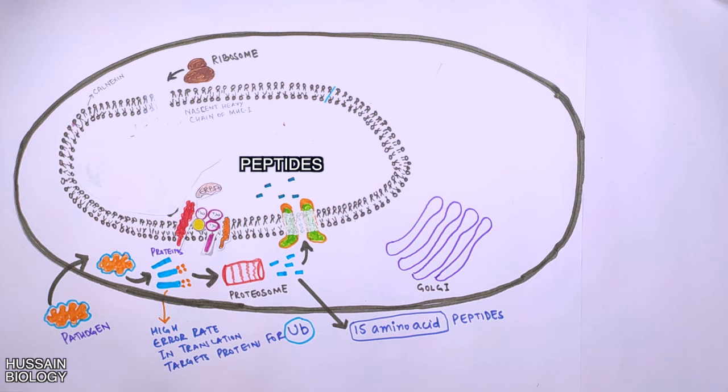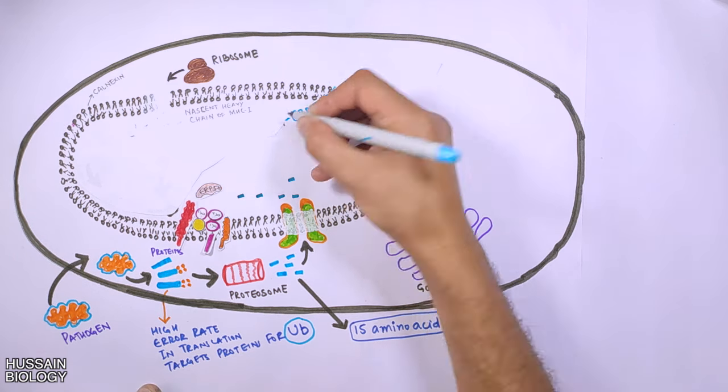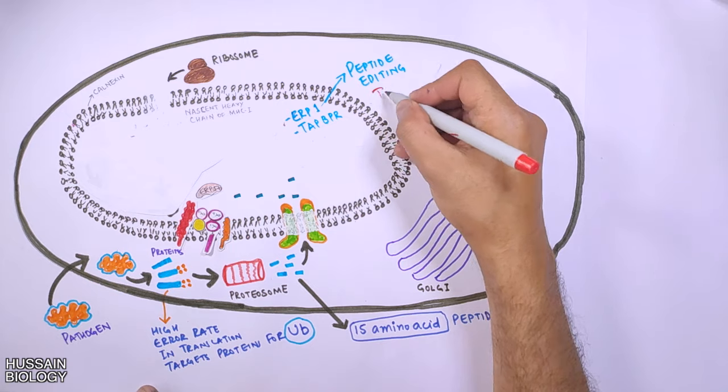Once peptides are inside the endoplasmic reticulum, these 15 amino acid peptide fragments are further trimmed into 8 to 10 amino acid long peptides by ERAP1 and TAPBPR in a process of peptide editing.